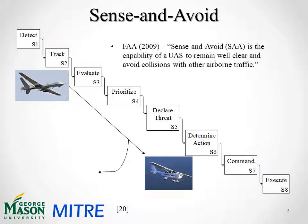The FAA defines sense and avoid as the capability of a UAS to remain well clear and avoid collisions with other airborne traffic. It's broken down into eight main subsystems. The first four — detect, track, evaluate, and prioritize — loosely comprise the sense half, while the last four — declare threat, determine action, command, and execute — comprise the avoid half. The UAS detects passively through its electro-optic infrared sensor whether an aircraft is near it, then tracks its position and evaluates whether the trajectories pose a risk. It then prioritizes multiple threats if they exist, declares a threat, determines an action necessary to avoid it, and commands and executes that maneuver.